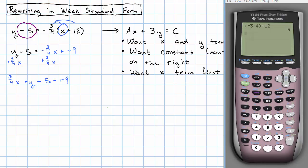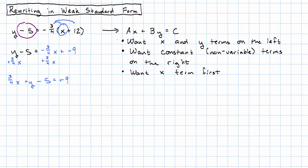So now I have all the variable terms on the left. Now I want to get all of the constant terms on the right. That means getting rid of the negative 5. To do that, I'll just add 5 to both sides.